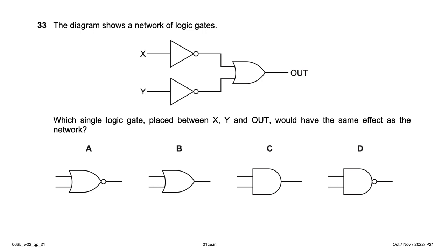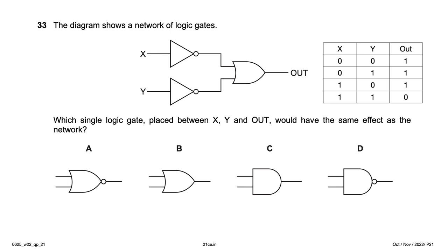The diagram shows a network of logic gates. Which single logic gate placed between X, Y, and output would have the same effect? Filling in the truth table: inputs 0,0 → 1; 0,1 → 1; 1,0 → 1; 1,1 → 0. This is simply a NAND gate — option D.